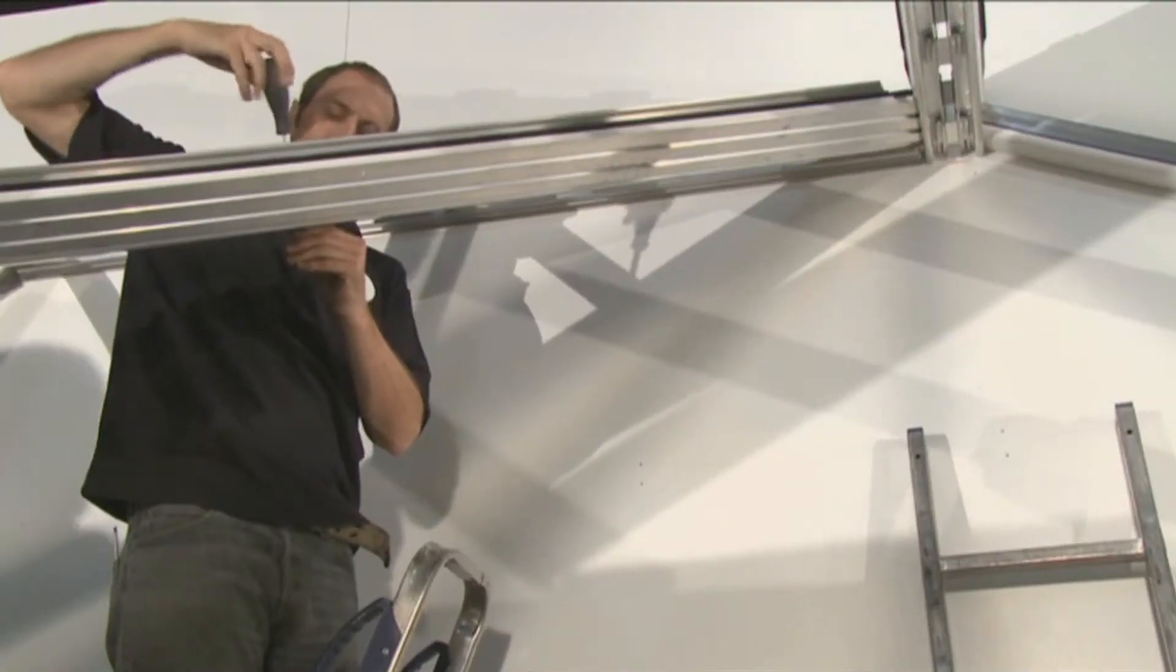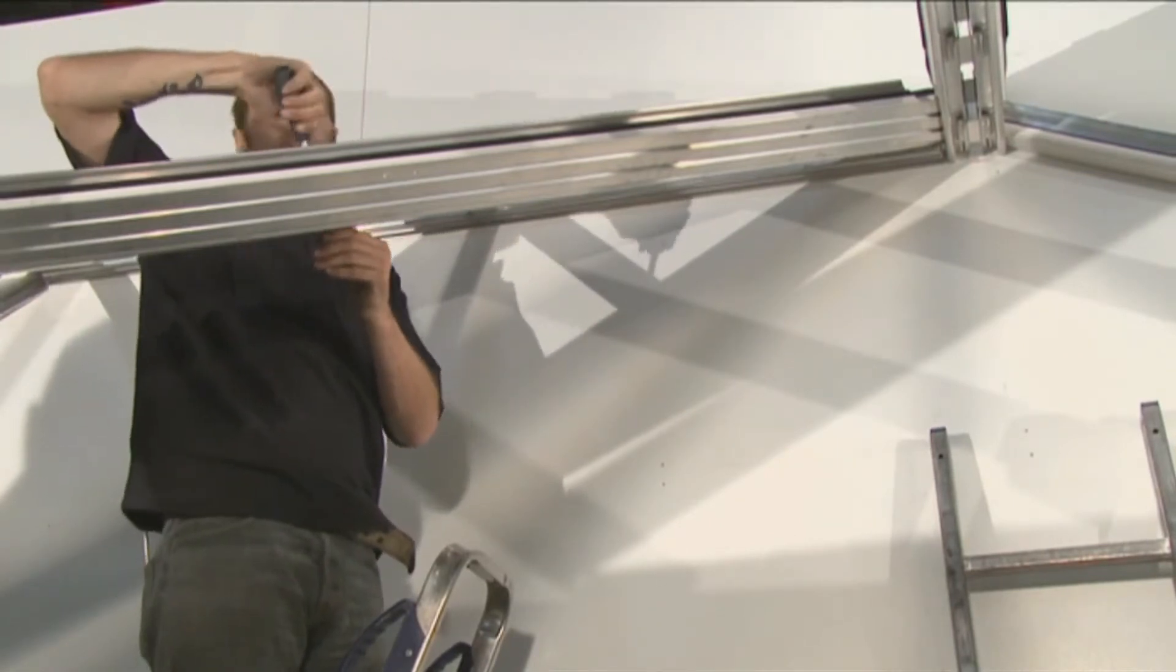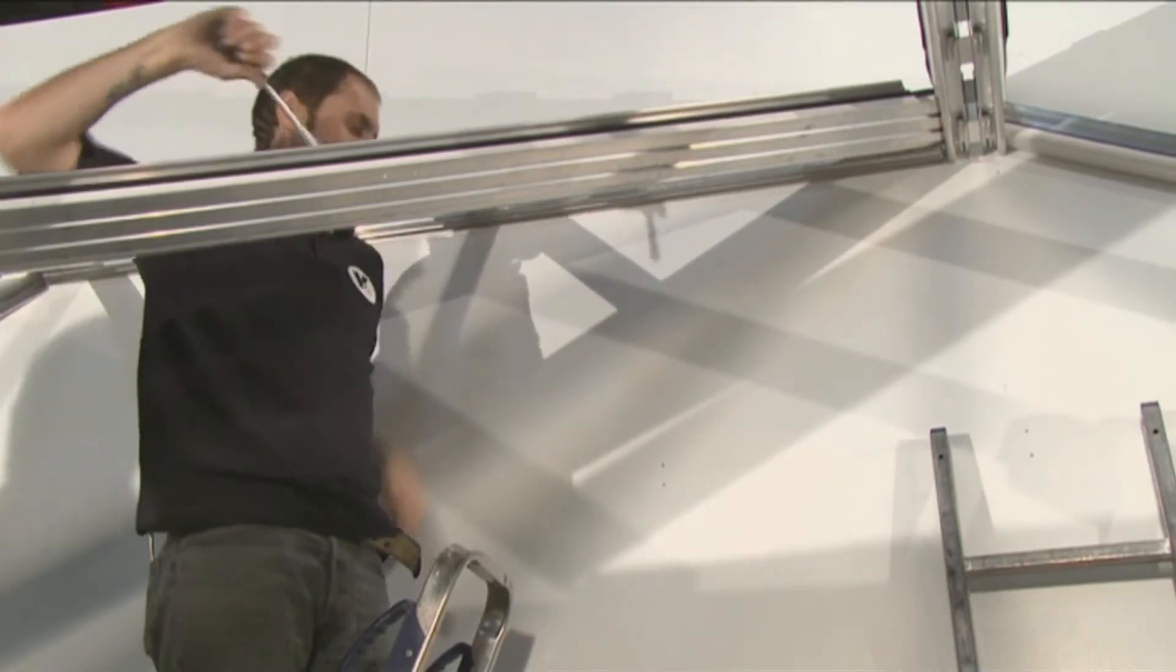From the underside, slot the M5 by 25mm bolts through the pre-drilled holes in the valley spar. Do not tighten. Repeat for every valley bar.